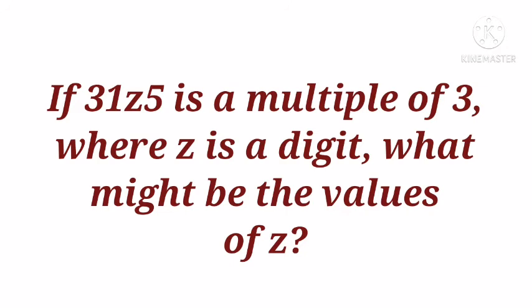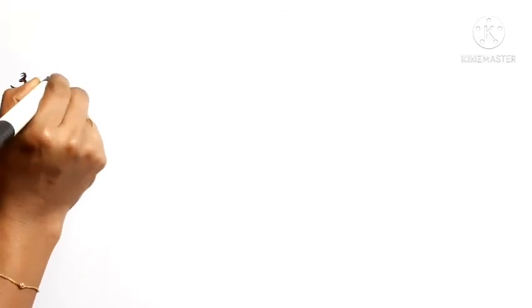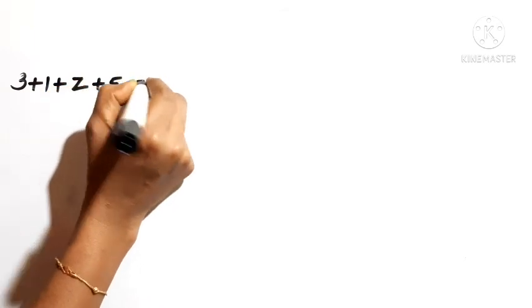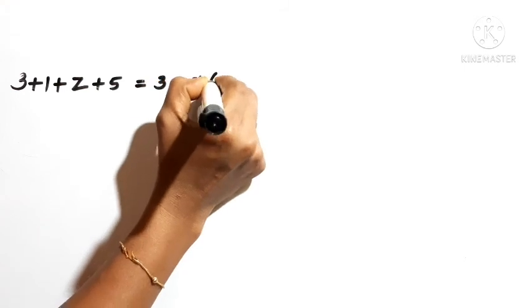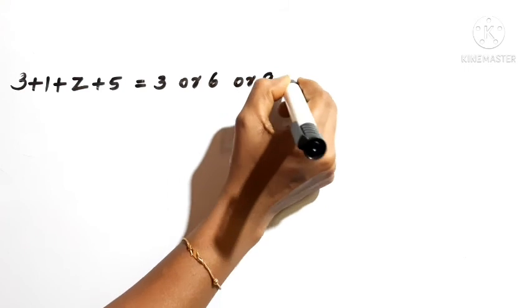If 31Z5 is a multiple of 3, where Z is a digit, what might be the values of Z? Here, 31Z5 is a 4-digit number. If it is a multiple of 3, we can write: digit sum 3 plus 1 plus Z plus 5 equals 3 or its multiples, such as 6, 9, etc.